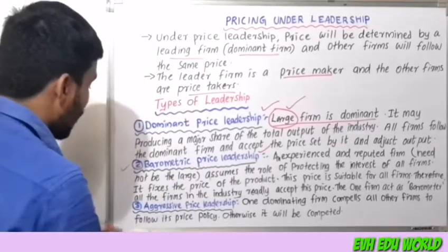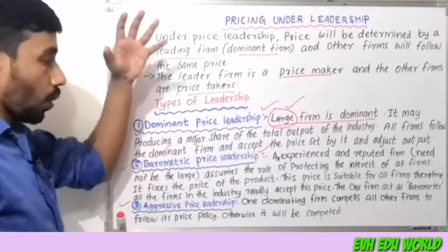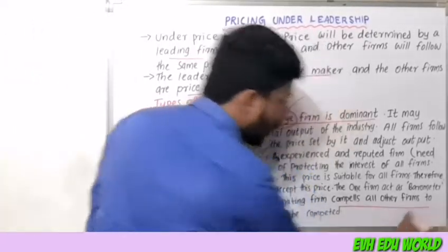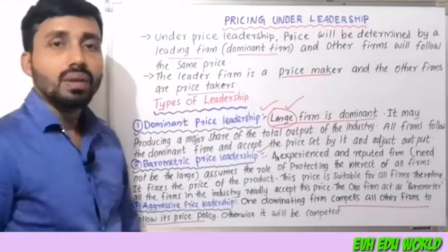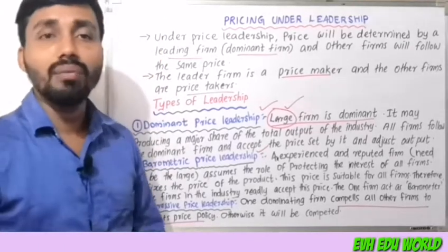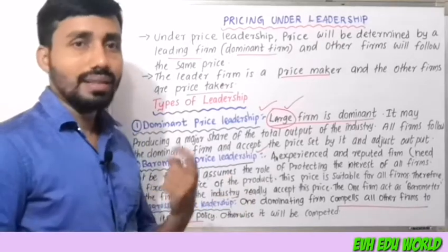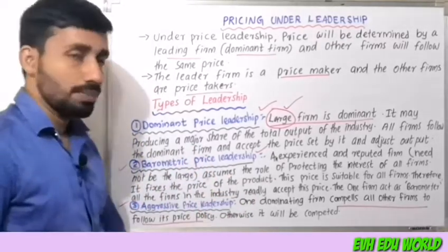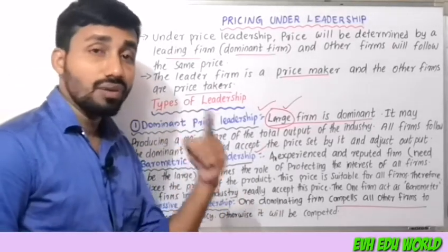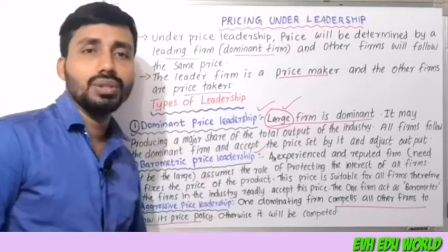The next type is aggressive price leadership. One dominating firm compels all other firms to follow its price policy. If the other firms do not follow, competition will result. The dominating firm acts as the highest-priced firm, and all others are compelled to follow.